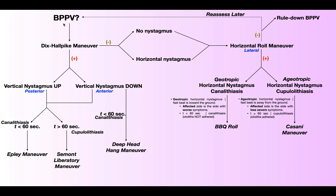Let's suppose you have a patient that you suspect has BPPV based on subjective reports of dizziness and also visual changes that involve the room spinning. So you perform a Dix-Hallpike maneuver, and it's positive. Remember that a positive Dix-Hallpike maneuver involves the production of vertical nystagmus that can either be upbeating or downbeating. The least common would be downbeating, and that implicates the anterior or superior semicircular canal. If it's upbeating, that implicates the posterior semicircular canal.